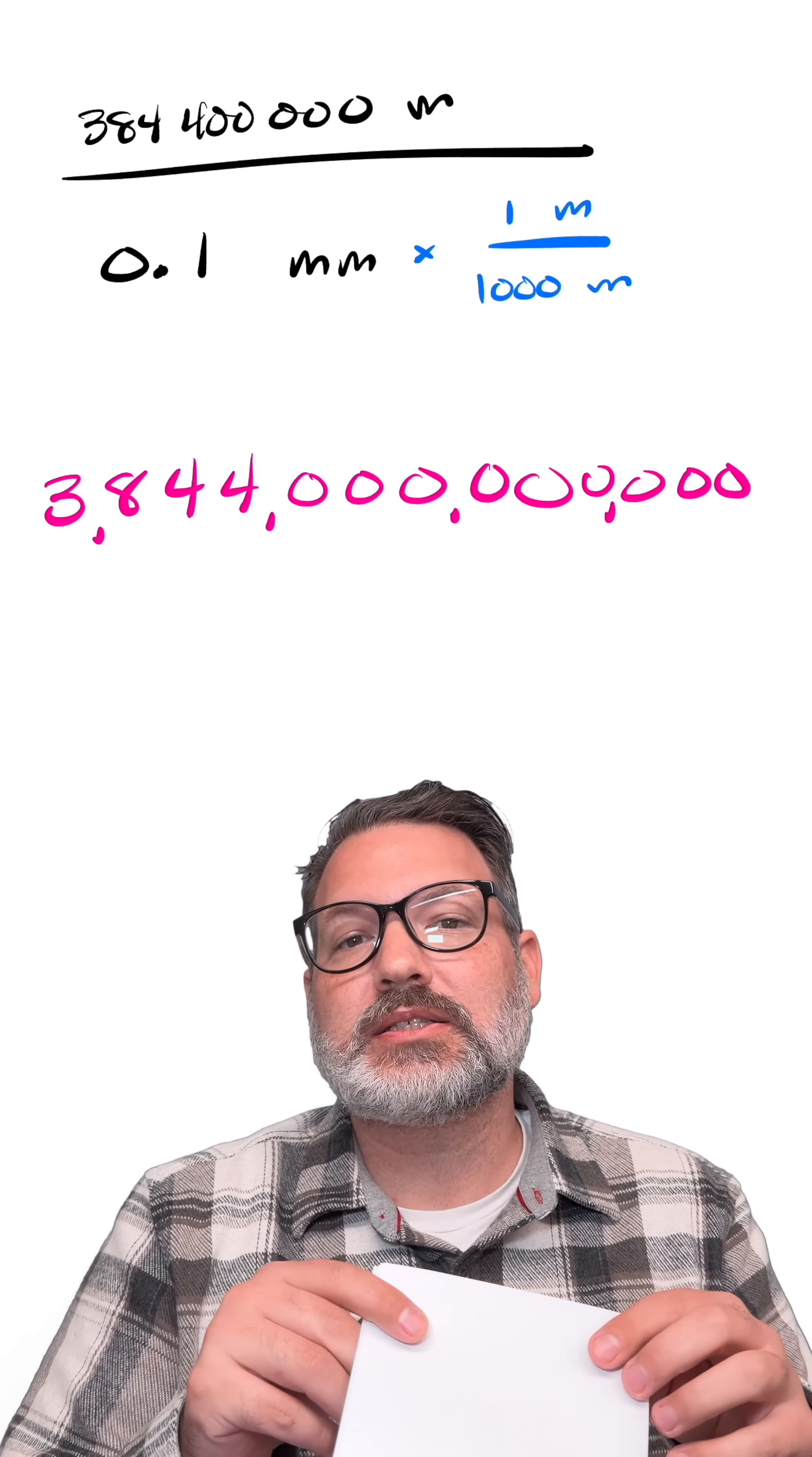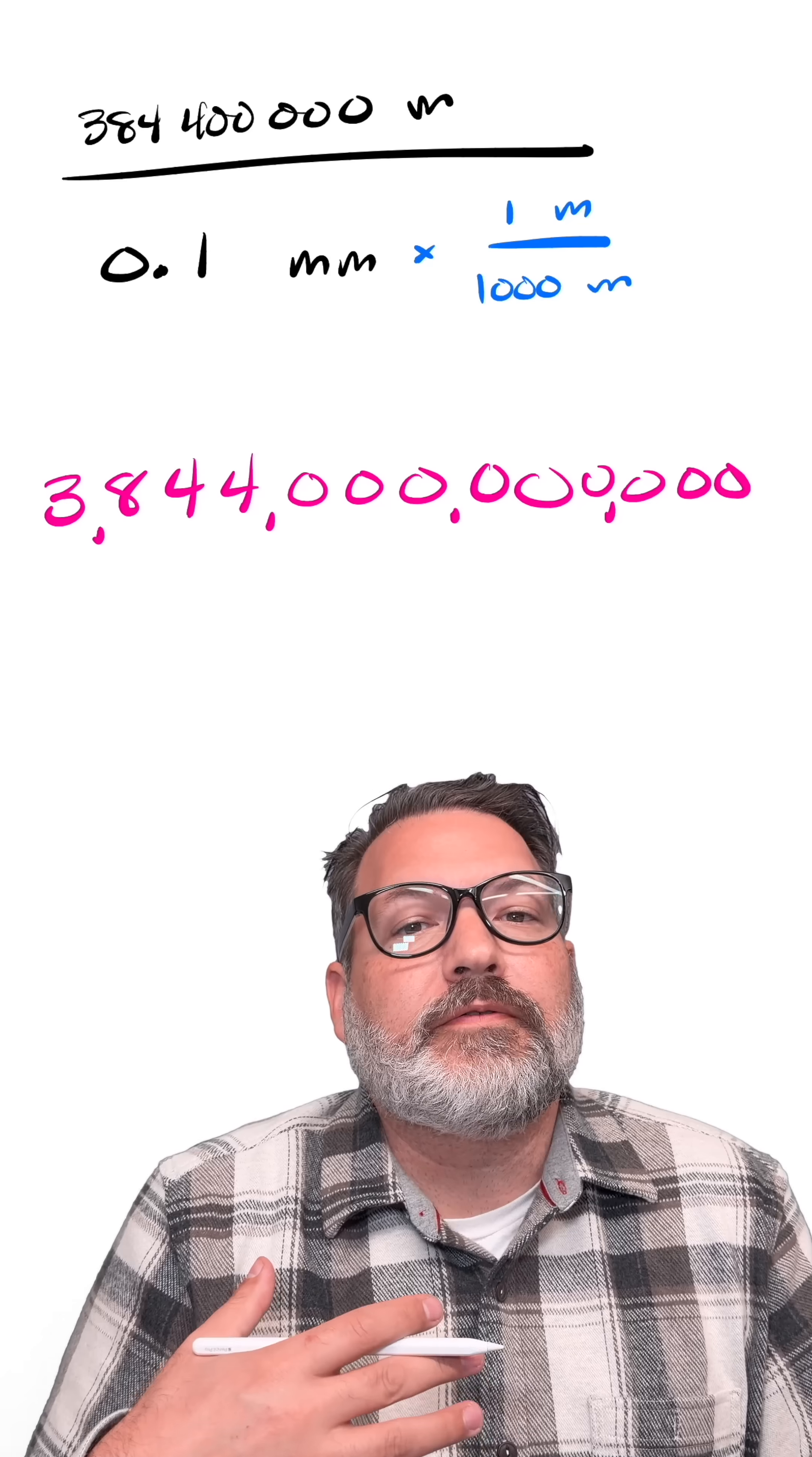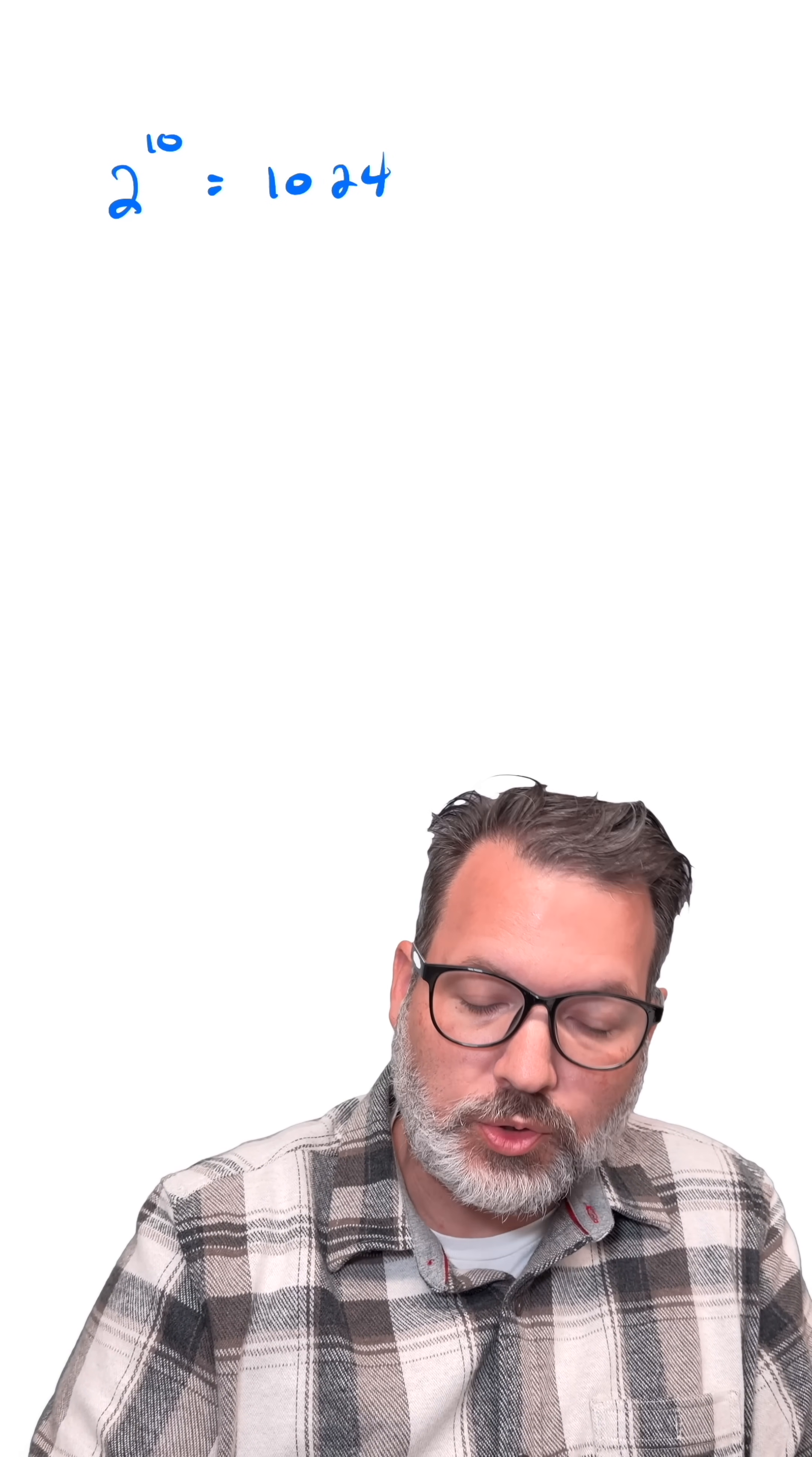So folding this twice actually got us something that was four times as thick as it was before. Of course, as you do this over and over again, you get something that grows very quickly, something that grows exponentially, to the point where if we just fold our piece of paper ten times, we're going to get something that's actually a little over a thousand times as thick as we started with. That's because two to the tenth is 1024.